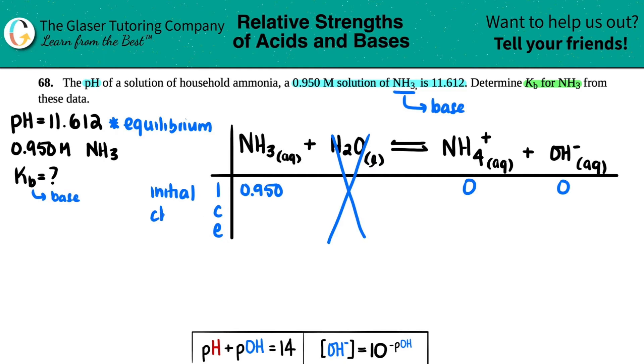C stands for change, the change in concentration from initial to equilibrium. And just know that if you started with nothing, you could only go up from there. So the product side has to be plus, and the reactant side is going to be minus. By how much? We don't know right now. So we call it a variable, X. So minus X, plus X, and plus X. And then E stands for the equilibrium, which is just the combination of your initial and your change. So 0.950 minus X, 0 plus X is just X, and 0 plus X is just X.